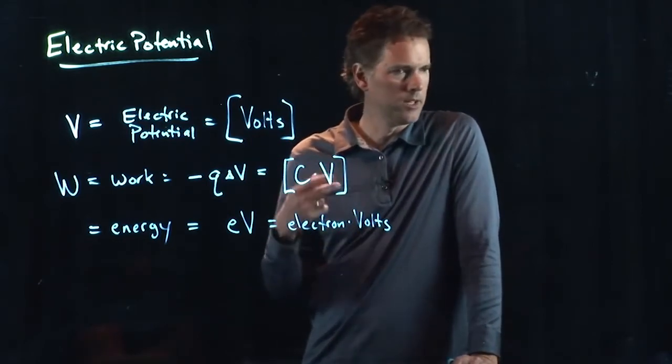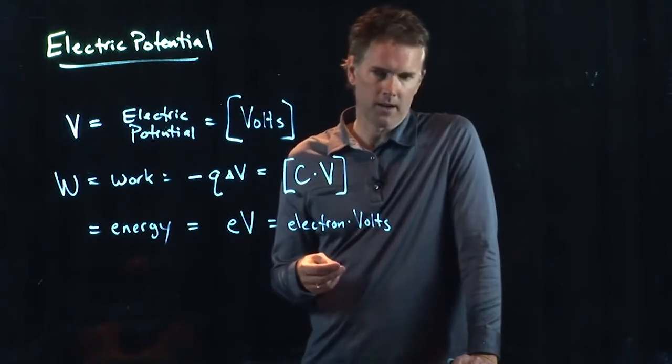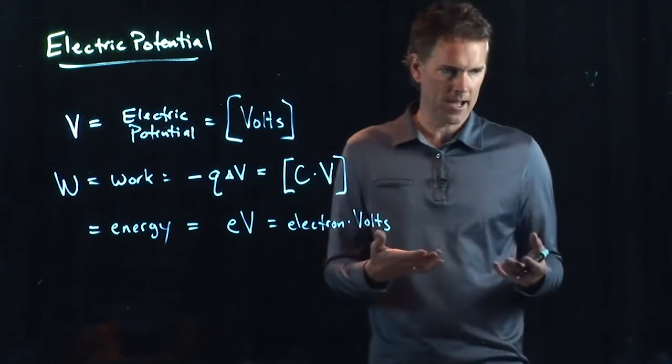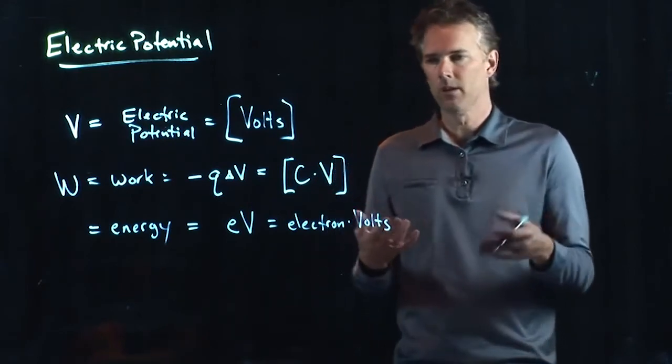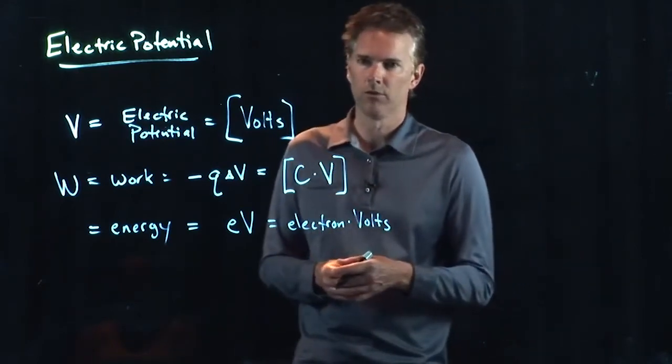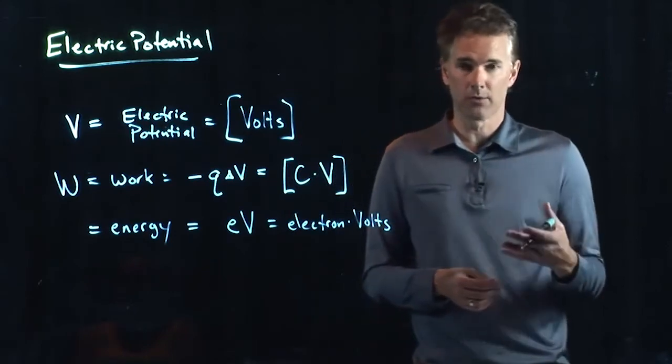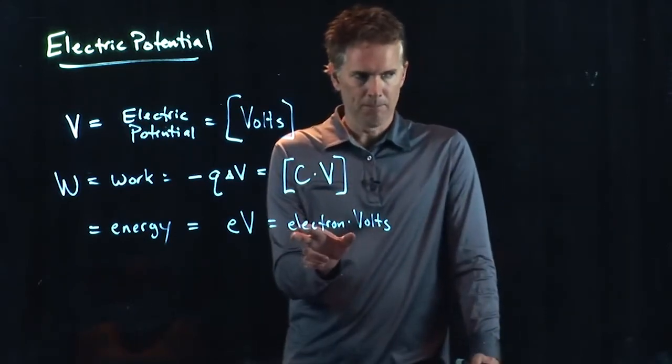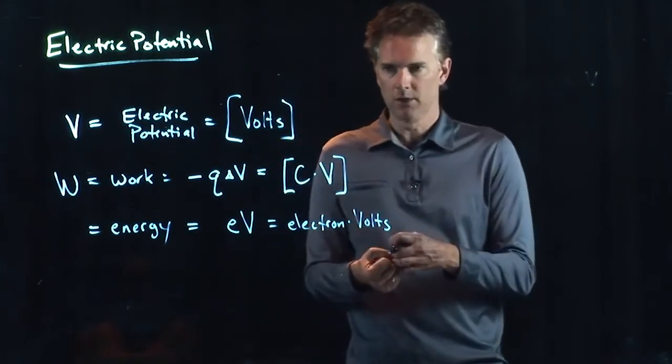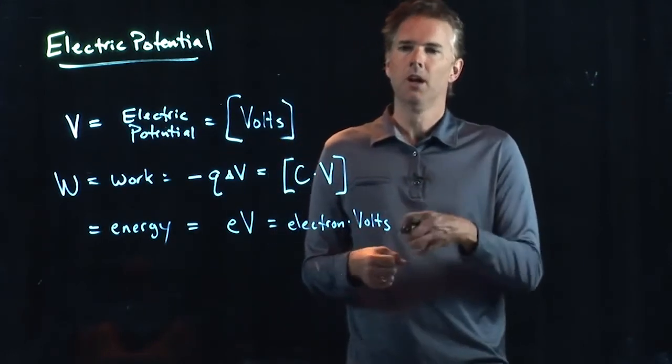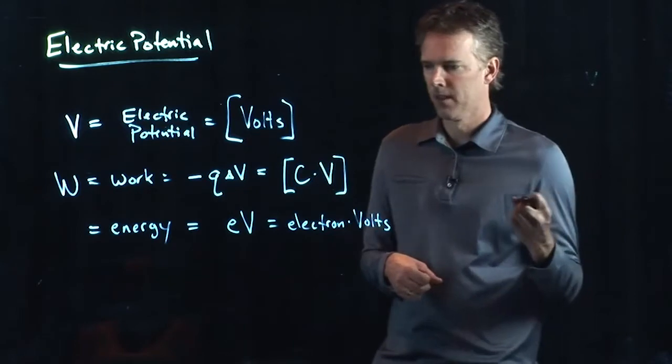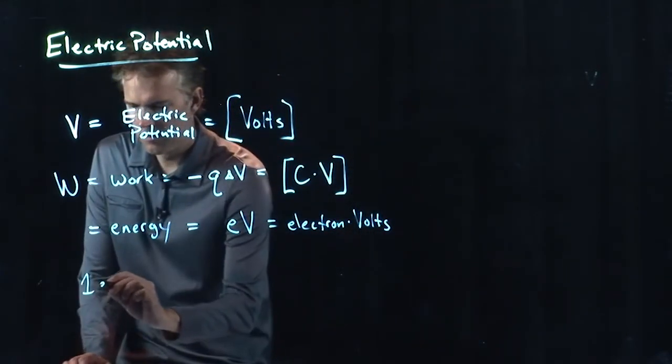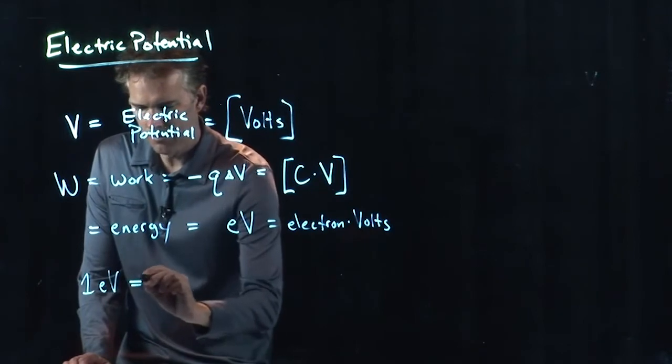particularly in your chemistry classes. When they talk about what's the ionization energy of a certain atom, they will say it is 6 electron volts or 13.6 electron volts. That is a unit of energy that says how much energy do you have to apply to the system to strip the electron off.